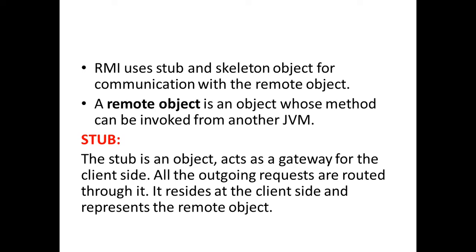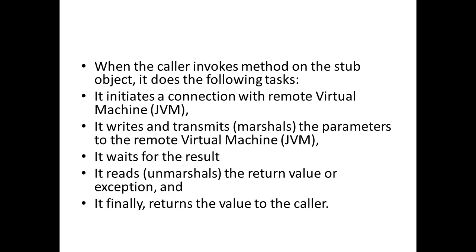Next, let's see what is stub. The stub object is for the client side and it acts as a gateway. All outgoing requests or information has to go through the stub object only — everything is handled by the stub object on the client side. All outgoing requests have to meet the requirements of this object before passing from one place to another. When you call the stub object it will perform the following tasks.